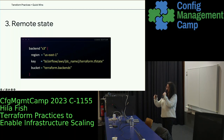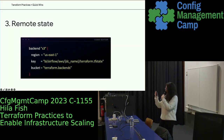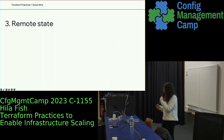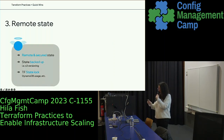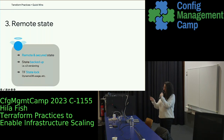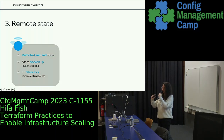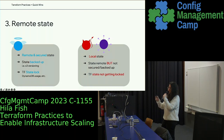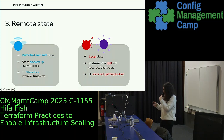The last thing in the quick wins section is remote state. By default, Terraform works with local states. Remote state helps scale your team because everything is remote and there is one source of truth. Make sure you have backups for your state — you can do it by enabling versioning on the S3 bucket. Make sure you have state lock on Terraform apply, because otherwise someone running Terraform apply at the same time will create conflicts and mess up the Terraform state. You can utilize DynamoDB for state locking.